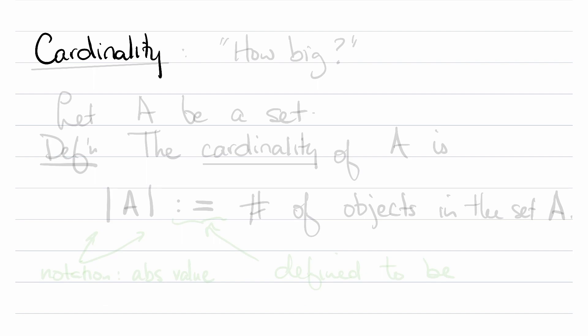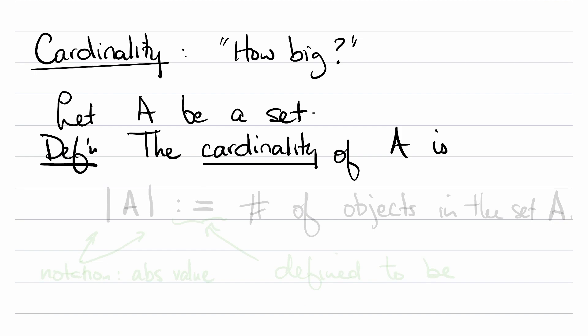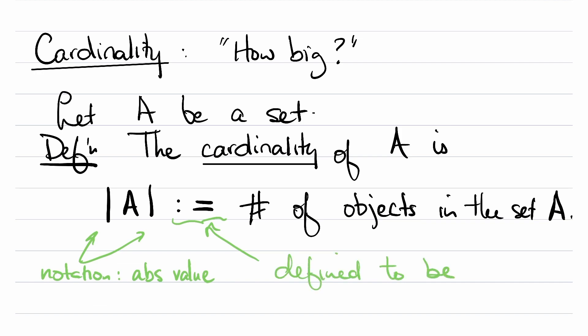Let's talk about cardinality. Much like numbers, this is a question of how big. So let A be a set. Definition: the cardinality of A is the number of objects in the set A. Here we'll note that the notation for cardinality is the same as the absolute value. And I've also snuck in a new symbol, which is a colon followed by an equal sign. And this means defined to be.